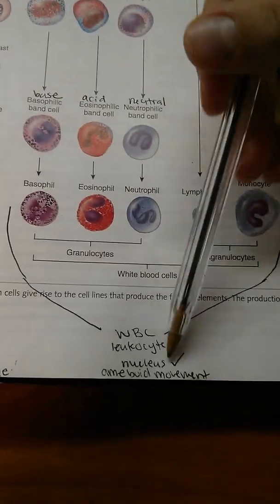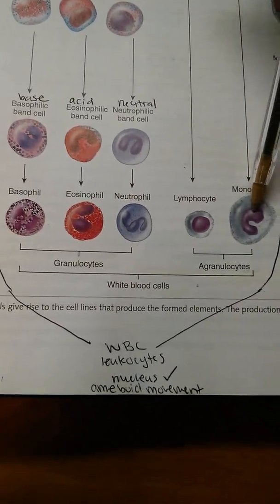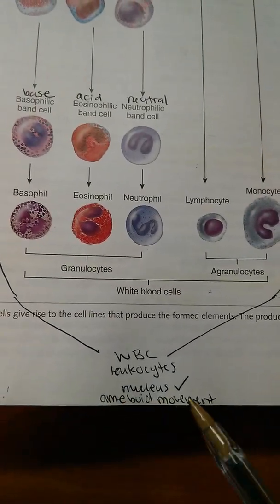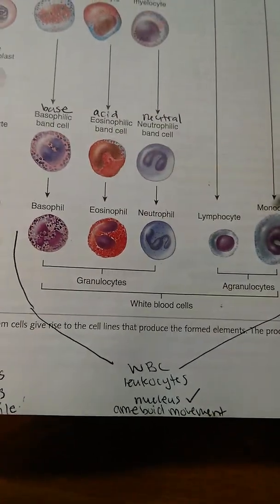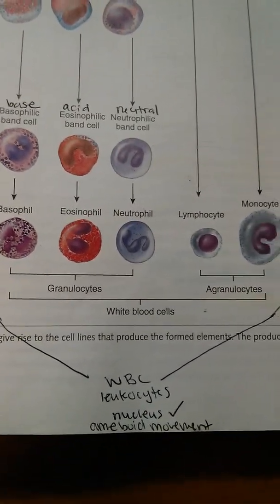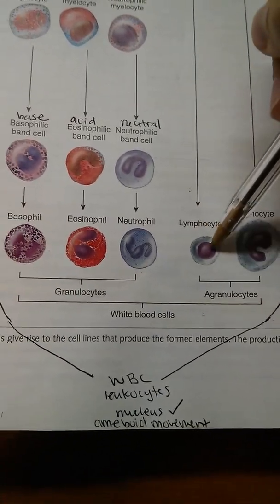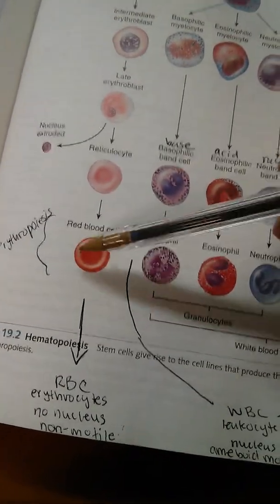White blood cells do have a nucleus. I like to think of it as they have a little brain because they are motile — they can move around by what we call amoeboid movement. They can slip through tight spaces between cells to get where they need to go. They kind of have a brain to tell them where to go, as opposed to the red blood cell which cannot move on its own and so doesn't need a brain.